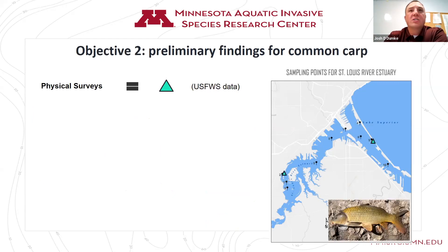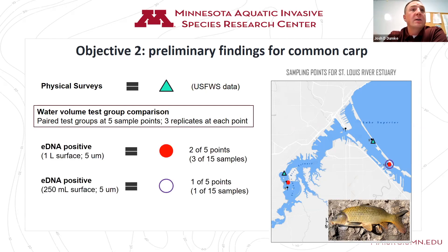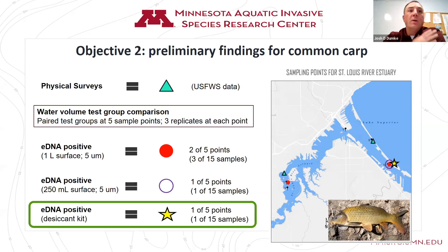For common carp, we're using Fish and Wildlife Service data captured about a week prior to our visit — they had done netting and captured common carp at two of the sample points. This is set up the same way as the rusty crayfish comparison: paired test groups at five points, three replicates each. One liter surface grabs returned positives at two of the points; 250ml surface grabs returned one positive. One point was positive with the desiccant kit. All three methods made a positive detection at that sample point, suggesting more carp DNA was likely concentrated there.